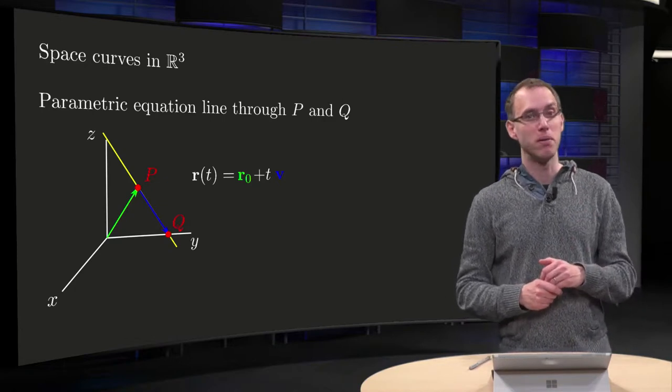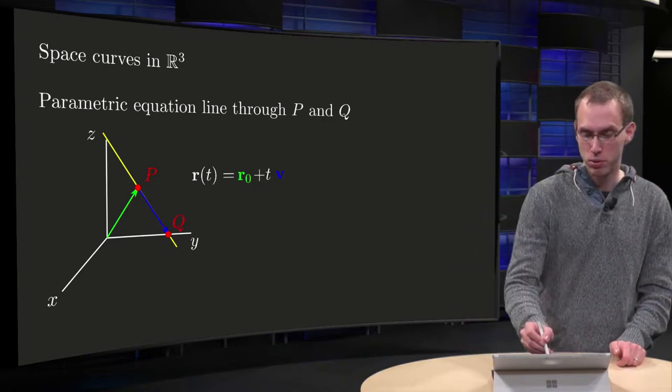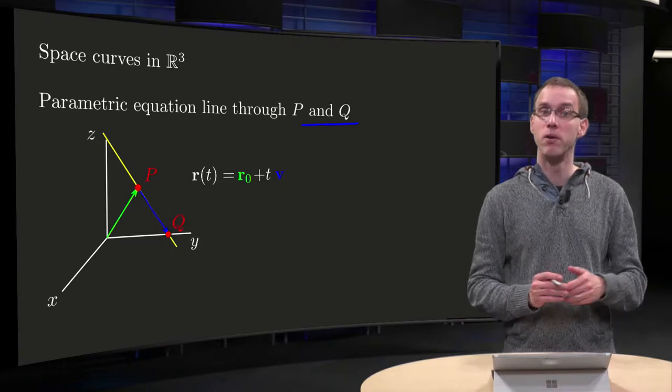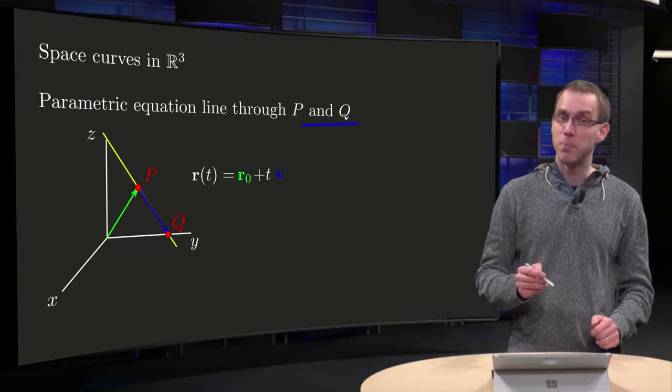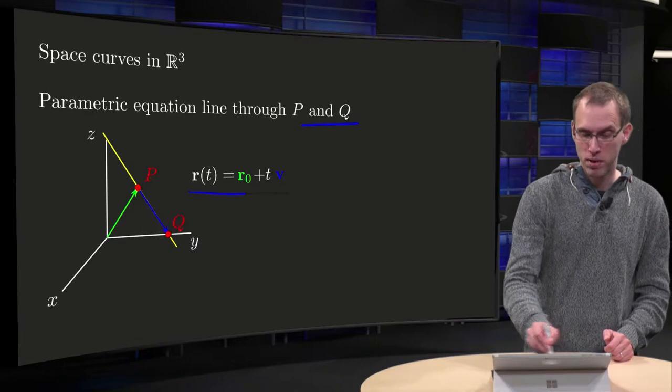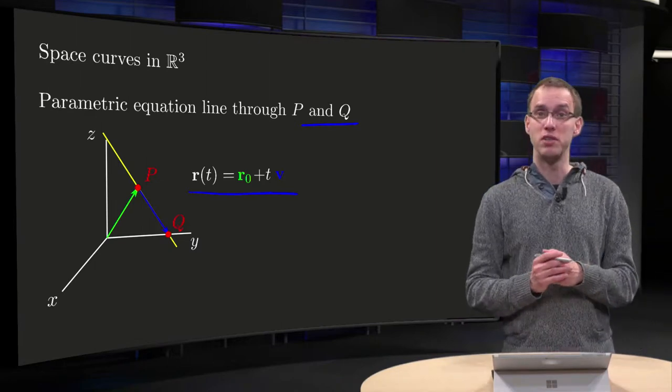First let's take a look at a parametric equation of a line through p and q, two points p and q. We know any parametric equation of a line is of the form r(t) equals r0 plus t times v.